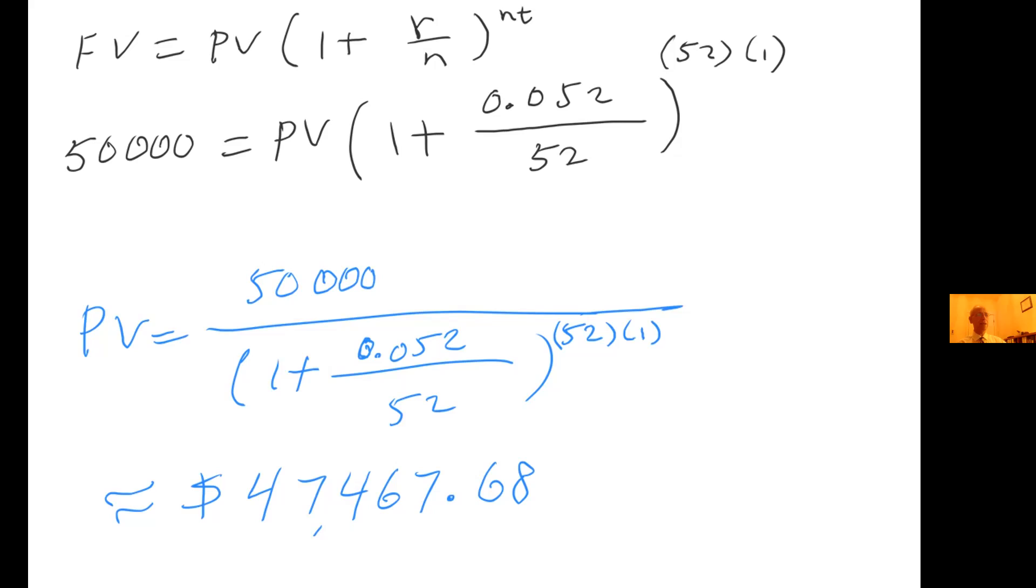One year is not too far from now. But what if instead of one year, you still wanted to have $50,000 but this time you had, let's say, 20 years to wait? How much would you need to deposit? Well then you would need to change the t instead of 1, then you would have 20. And for 20 years, if you have 20 years to wait, that would be $17,681.92.